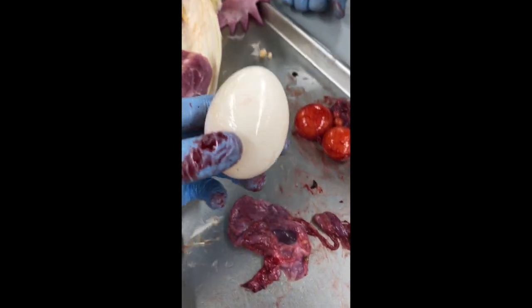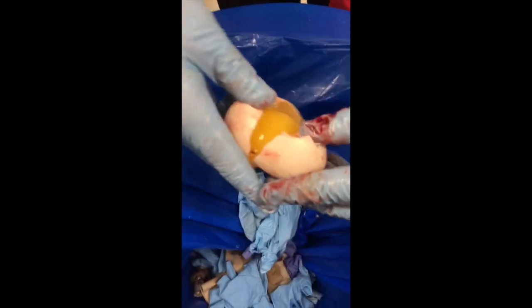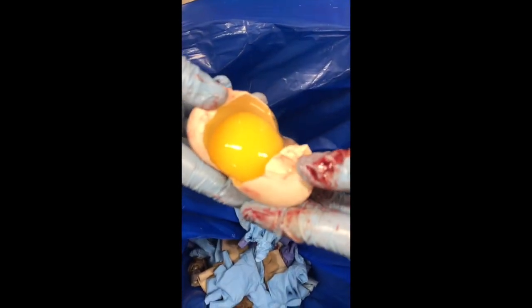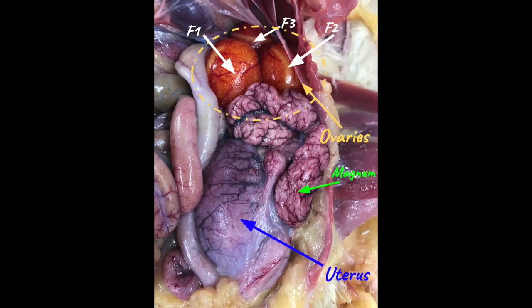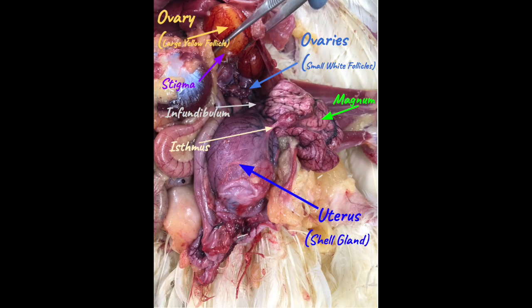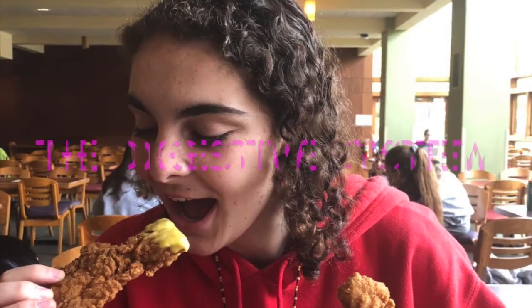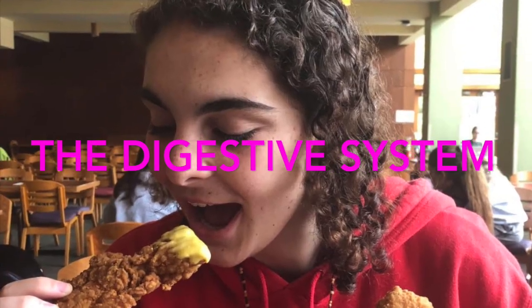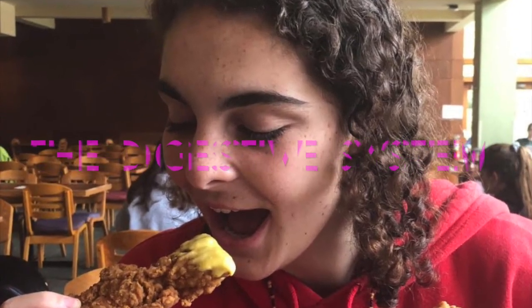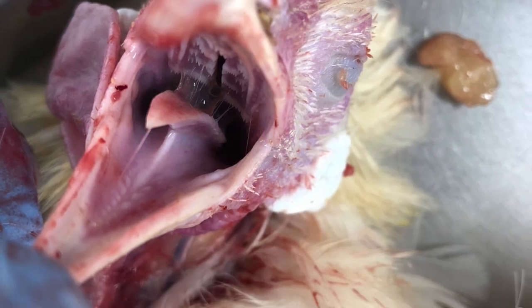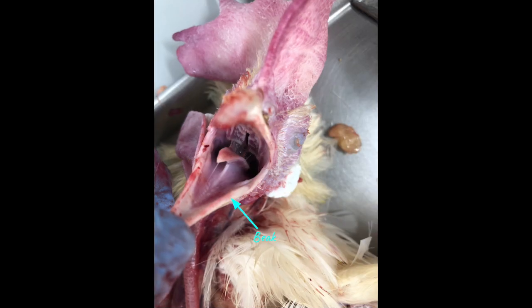While hens have an ovary and a uterus, roosters have testes and vas deferens, which sends sperm to be stored in the hen's oviduct.